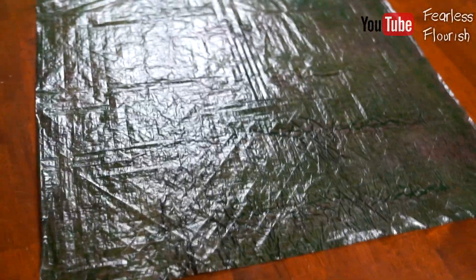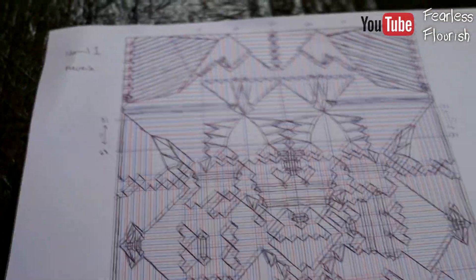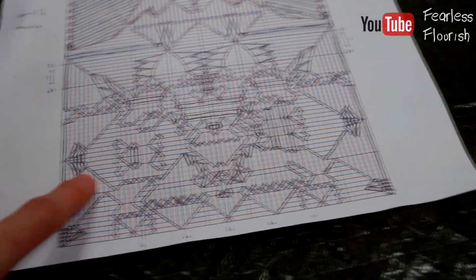So what I do is, whenever I fold from a crease pattern, I print the crease pattern off three times. The first one is the normal crease pattern. So I've got normal one and it says pre-crease. So this crease pattern I use to pre-crease.